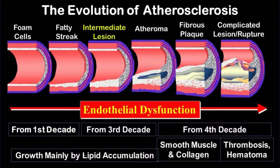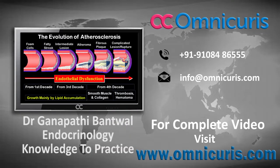You have the intermediate lesion and atheroma. Then from the fourth decade onwards you have the fibrous plaque, followed by the complicated plaque which can rupture, finally leading to acute coronary syndrome. The growth mainly occurs by lipid accumulation to begin with, then by smooth muscle and collagen proliferation, and finally leading to thrombosis and hematoma.